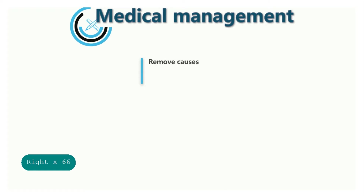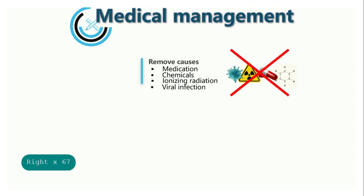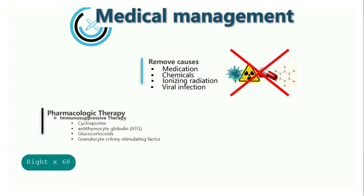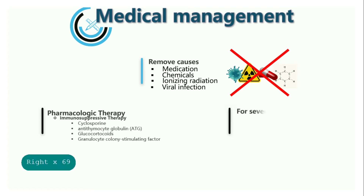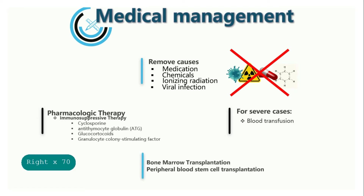For medical management, any offending agents are discontinued or removed, such as medication, chemicals, radiations, and viral infection. Another treatment is immunosuppressive therapy. Immunosuppressants prevent the patient's lymphocytes from destroying the stem cells. These include cyclosporine, ATG, glucocorticoids, granulocyte and colony-stimulating factor. For severe cases, it is recommended to have blood transfusion. Another treatment is bone marrow transplantation or peripheral blood stem cell transplantation.